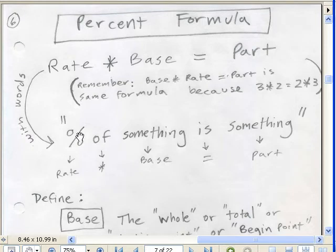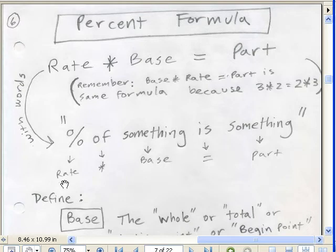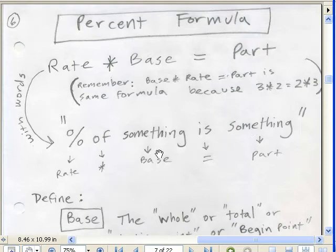In this math class, we've seen how to translate words into math symbols. A lot of times you'll see something as: "the percentage of something is something." The percent means the rate. The word "of", as we saw before, means multiply. Something like 10% of income is your tax — so the something right after "of" is the base, and "is" means equal, and what follows is the part.